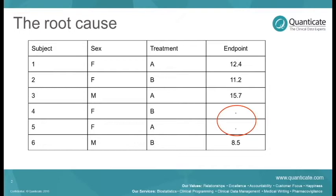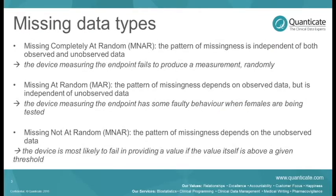I believe we all know the taxonomy of missing data types. I've given here a very brief overview. Data can either be missing completely at random (MCAR), which is the simple situation where for whatever reason a data point is not recorded absolutely at random - there is no real explanation. The example I've given here is that the device which measures the endpoint simply fails to produce a measurement randomly because of some kind of bug in the machine.